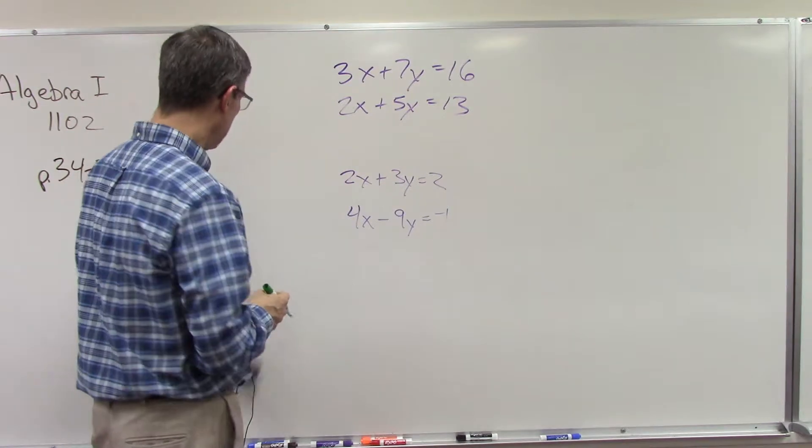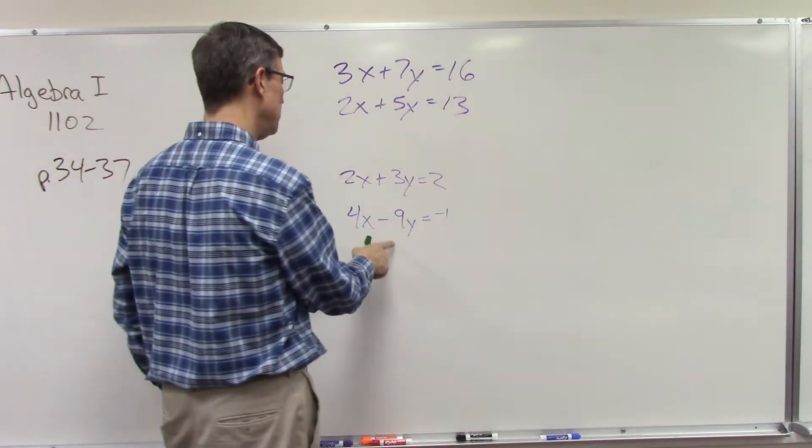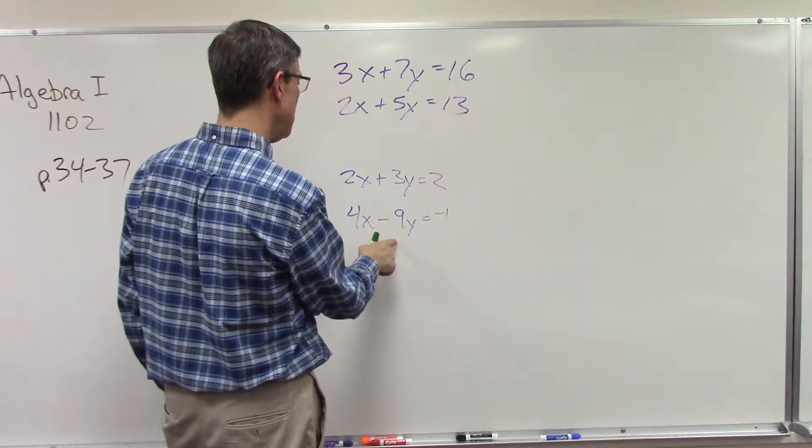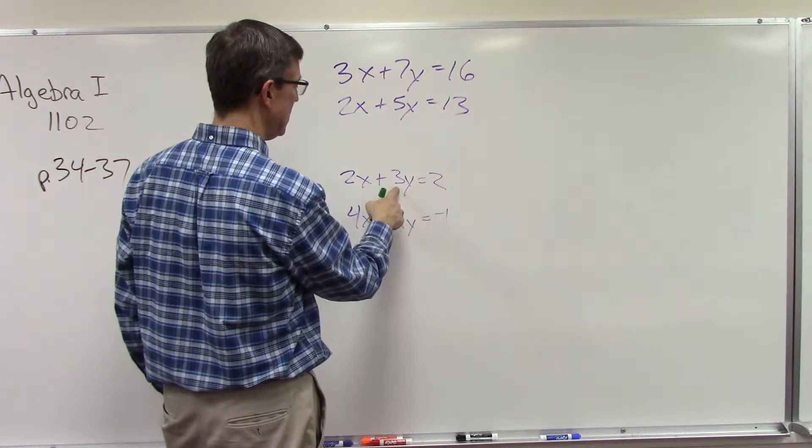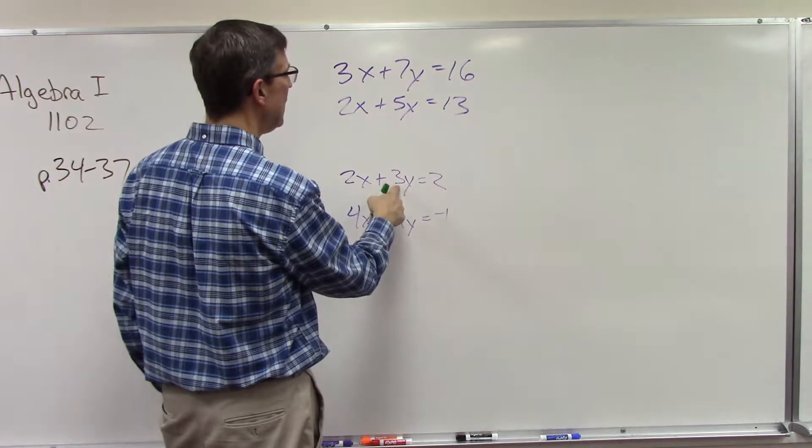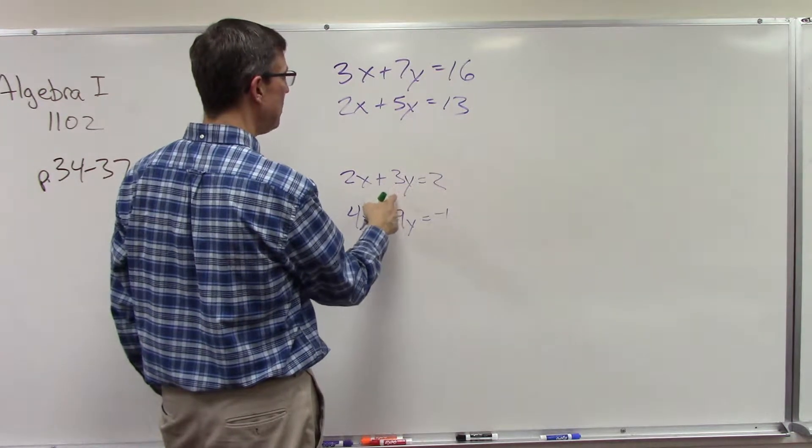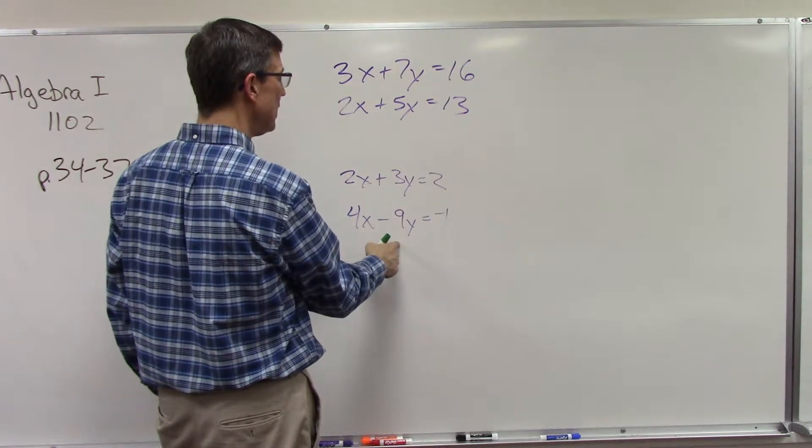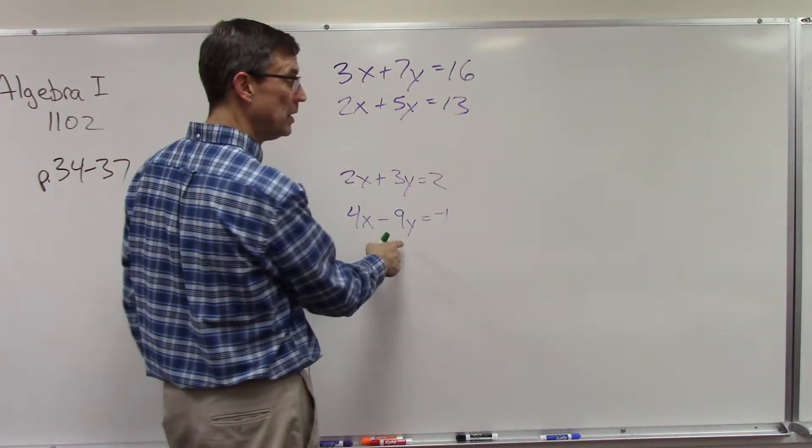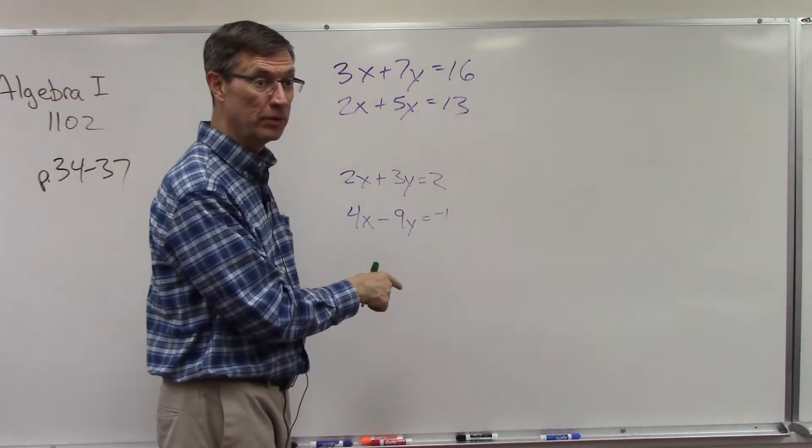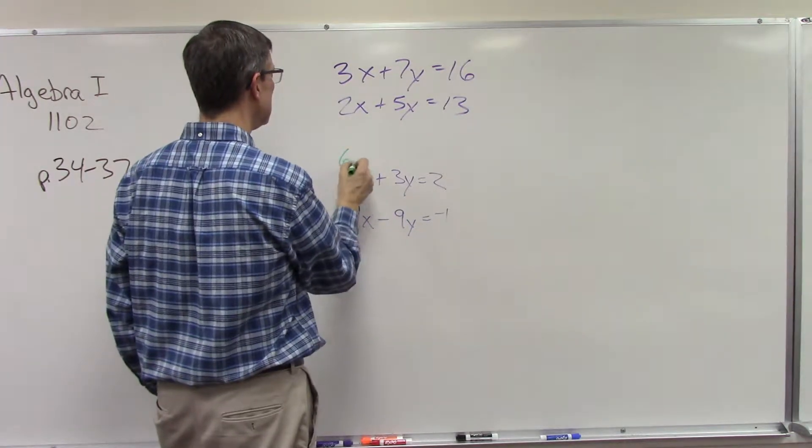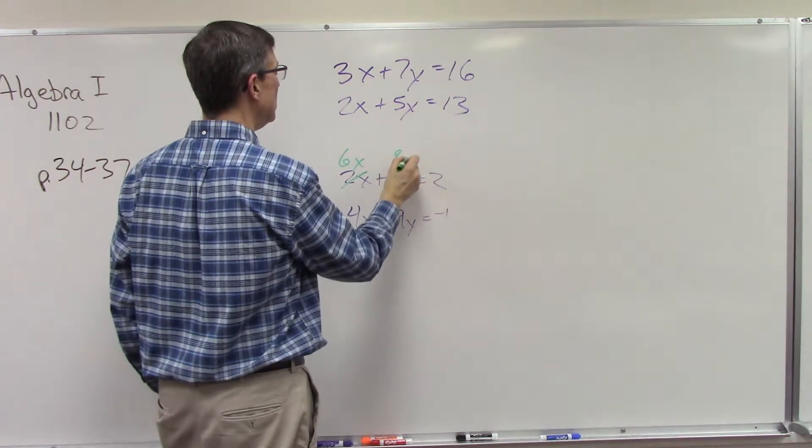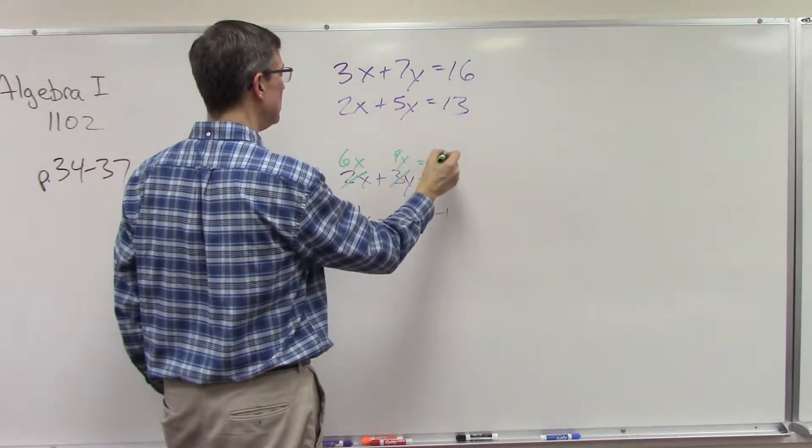But another way is I can look at this and say you know what, if I just multiply this one through by 3, this will give me 9 here. And once I have a positive 9y, I can just add this equation to it and the negative 9y will cancel out. So multiplying everything by 3 would give me 6x, 9y, and 6.